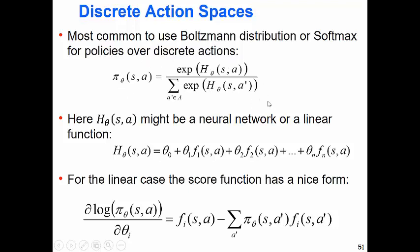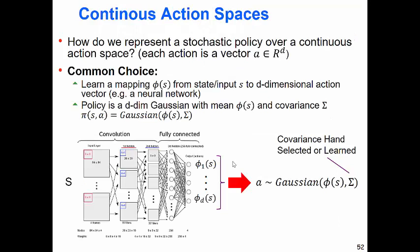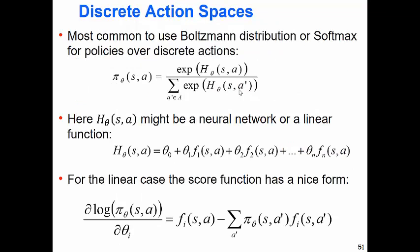We've called that a Boltzmann distribution. The neural network represents this H function with one node per action in the output layer — like we saw for Atari — and you normalize it using the exponential. For a linear function the parameters are the thetas; a neural network is just a series of these functions with nonlinearities between them and many more parameters. For discrete spaces this is basically what we saw for Atari.